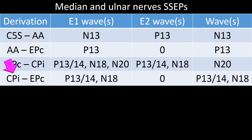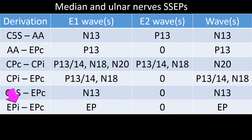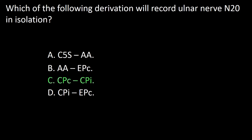In the CPC to EPC derivation, the resulting waves are P13-14 and N18, for the same reason as the AA to earth-point derivation. The C5S to EPC derivation results in an isolated N13. The EPI to EPC derivation results in the air point potential. So the answer to this question is C.